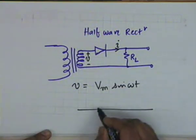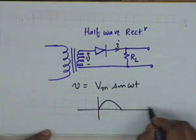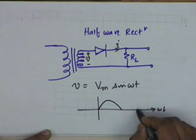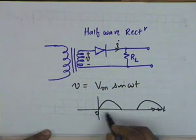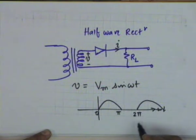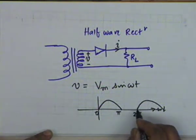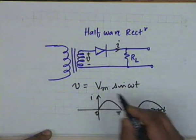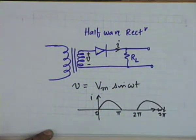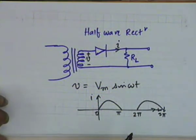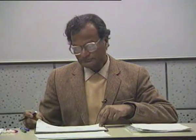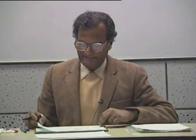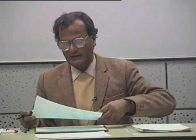If you draw a sketch of I versus ωt, what you get is only a half sinusoid from 0 to π, then from π to 2π it is 0, and from 2π to 3π it is again a half cycle, and so on. This will be the current waveform, and the voltage across the load is simply current multiplied by resistance, so the voltage waveform shall also have the same type of waveform — current multiplied by RL.